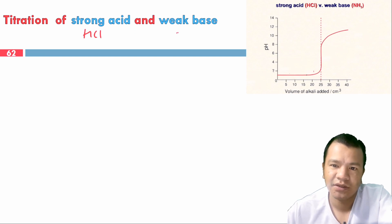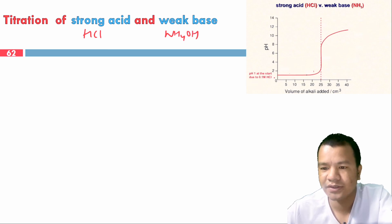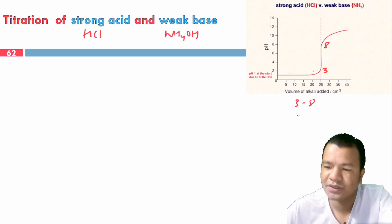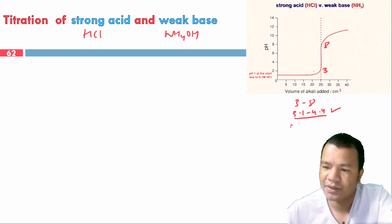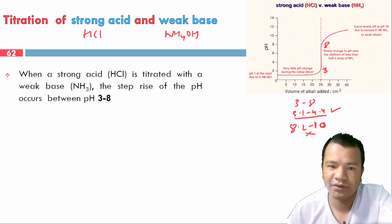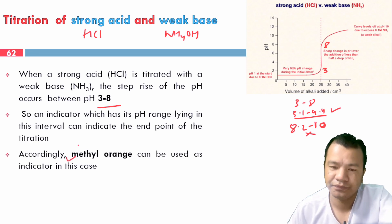For weak acid versus strong base, we should use strong acid conditions. The pH range suitable is approximately 6 to 11. Phenolphthalein (8.2–10) can be used, but methyl orange (3.1–4.4) is not suitable as its range falls outside the steep rise.